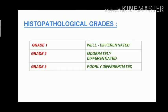Coming to the histopathological grades of laryngeal carcinoma, it is divided into three grades: grade one is well-differentiated carcinoma, grade two is moderately differentiated, and grade three is poorly differentiated.